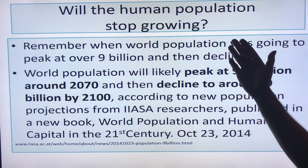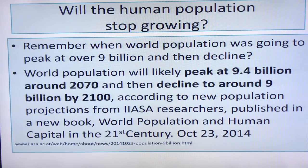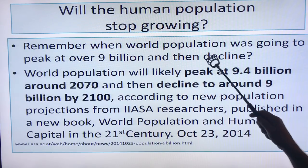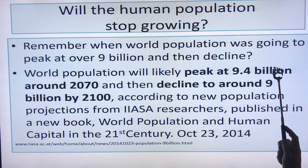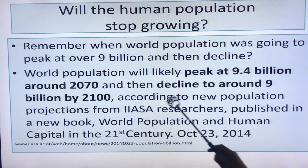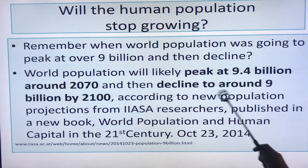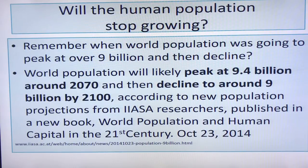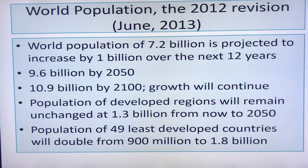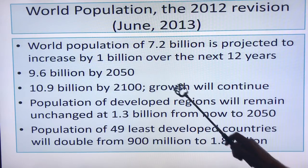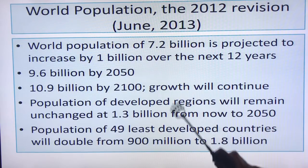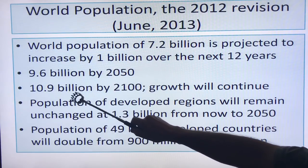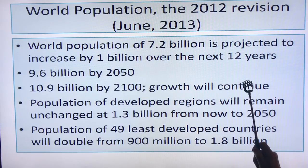When will the human population stop growing? We were told the world population was going to peak at just over 9 billion — likely peak at 9.4 billion around 2070 and then decline to around 9 billion by 2100, according to projections in the book 'World Population and Human Capital in the 21st Century.' But that was revised: world population is now projected to increase 1 billion over the next 12 years from 7.2 billion, reaching 9.6 billion by 2050 and 10.9 billion by 2100, with growth continuing after that.